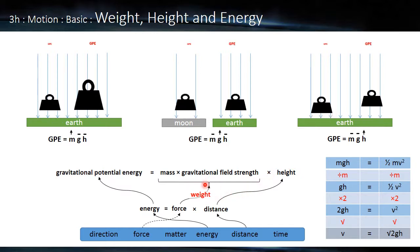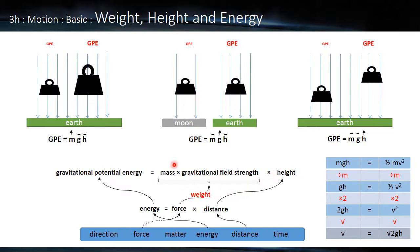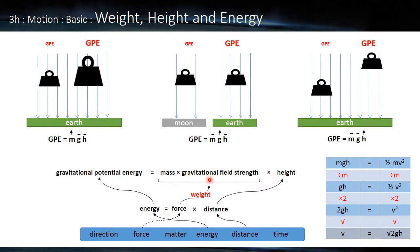So weight is composed of two things, or it's determined by two things, the mass of an object and the strength of the gravitational field in which it finds itself.